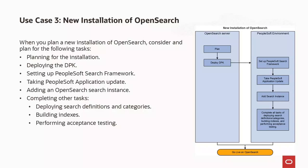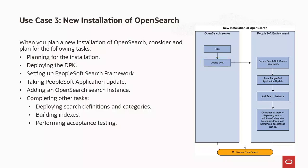You want to use OpenSearch as the search engine for the PeopleSoft Search Framework. On the OpenSearch server, you need to plan — estimate the resource requirements and review settings needed for the host on which you install OpenSearch. Refer to the PeopleSoft Deployment Packages Installation for Search Components PeopleTools 8.61. Then deploy the OpenSearch DPK and run the configuration script on a Microsoft Windows or Linux host. Make sure you have at least taken the bugs related to OpenSearch for your PeopleSoft application as shown on the PeopleSoft Search and Insights homepage.